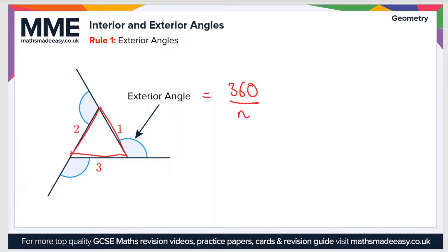And n is the number of sides, so there are 1, 2, 3 sides in a triangle. So the exterior angle of a triangle is 360 divided by 3, which equals 120 degrees. So the exterior angle here is 120 degrees.